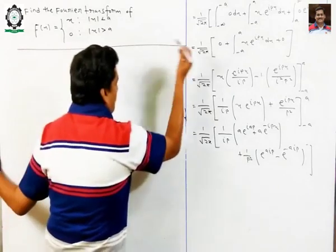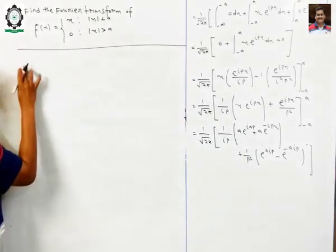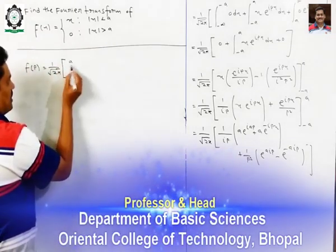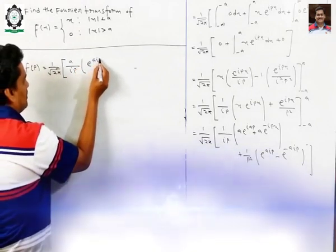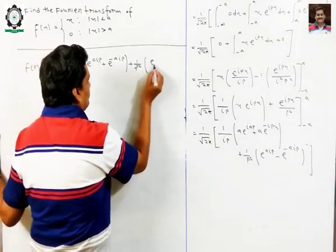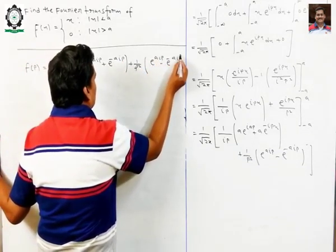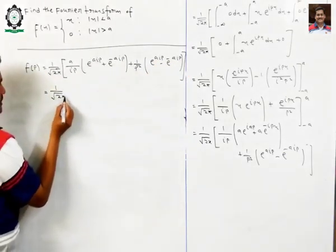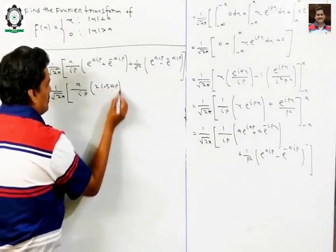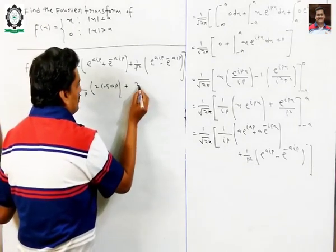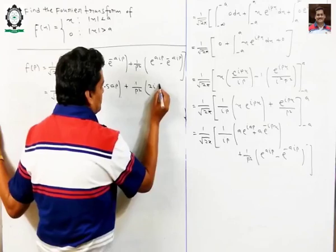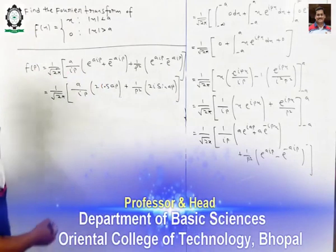So this equals 1 over root 2π times (a over ip) times (e to the power aip plus e to the power minus aip) plus 1 over p² times (e to the power aip minus e to the power minus aip). This is 1 over root 2π, this is a over ip, or this is 2 cos. Then 1 over p² minus 2i sin.